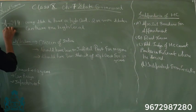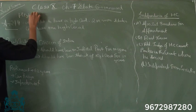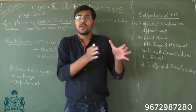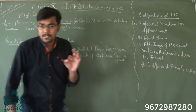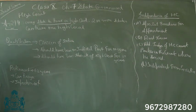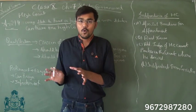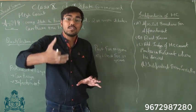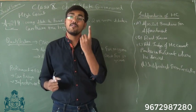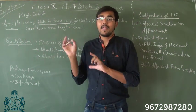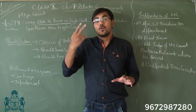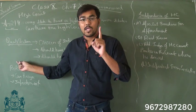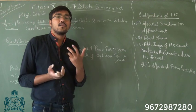Article 214 says that every state should have a High Court. Article 215 also states that every state should have a High Court, but two or more states can have one common High Court. For example, Punjab and Haryana share one High Court, which is located in Chandigarh.